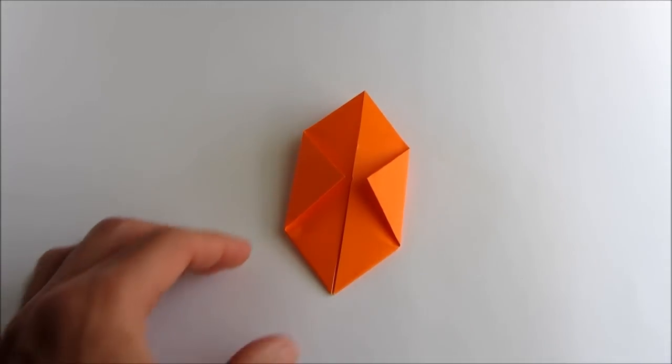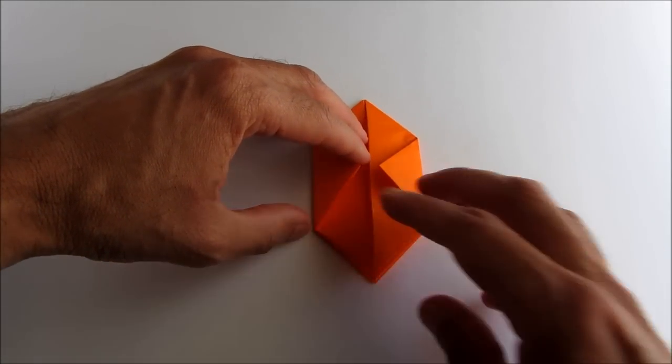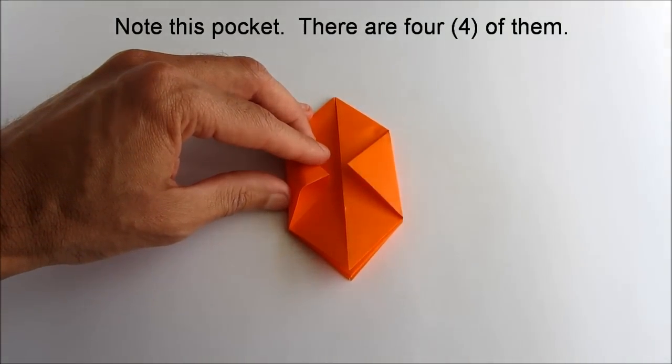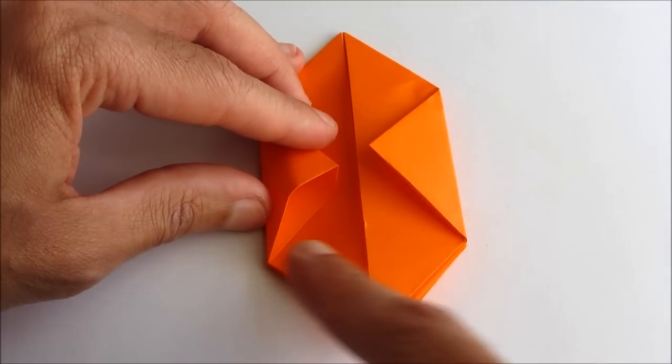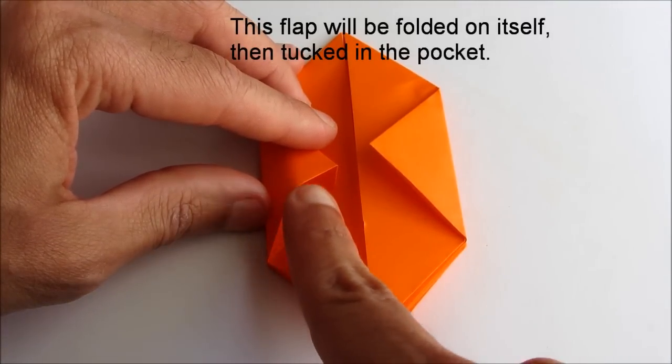Now rotate the piece 180 degrees. You'll see there are some pockets here, actually four—two on the front and two on the back side. What you're going to do is take the nearest flap and fold it into that pocket.